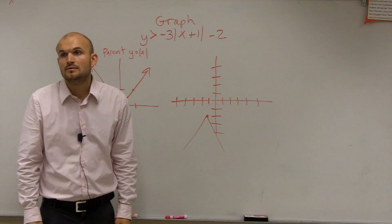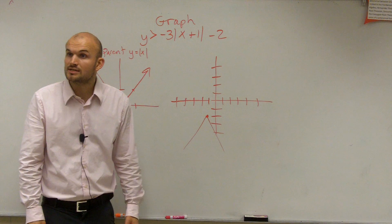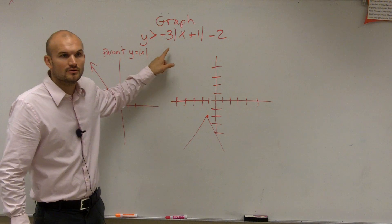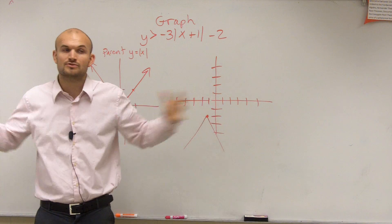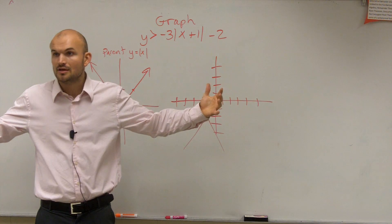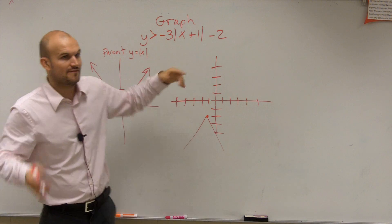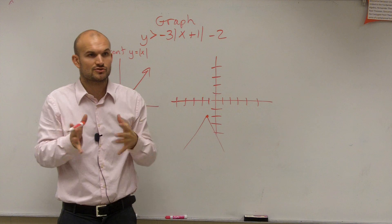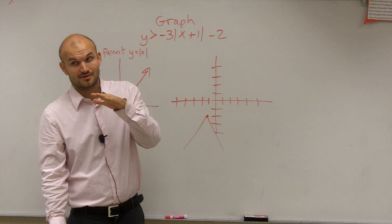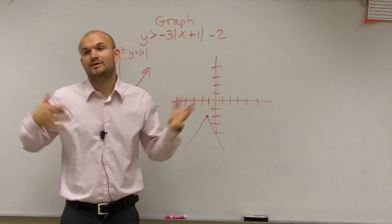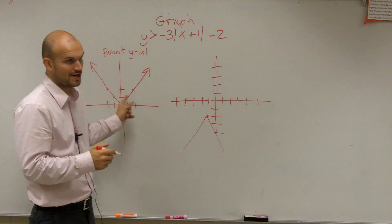What does the 3 do? Remember, what does the 3 do? 3 is going to dilate it, right? It's going to either compress it or stretch it out, correct? So when A is the absolute value of A, we don't worry about the negative. If it's greater than 1, what does it do? It stretches it vertically, but you could say compresses it horizontally. So we just say it's skinnier, right? It looks skinnier than the parent graph.